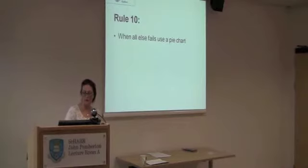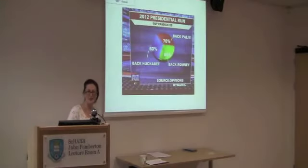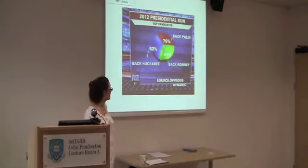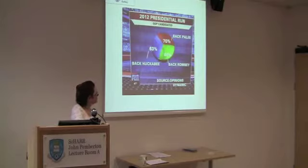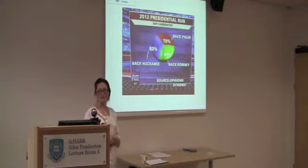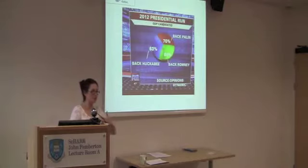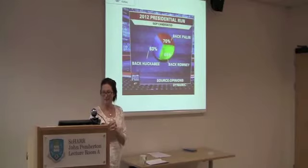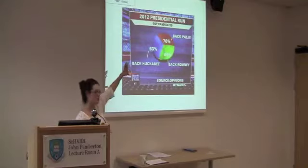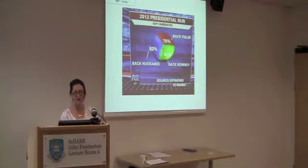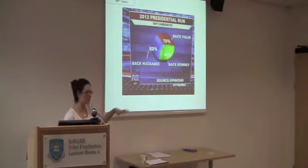Rule ten: when all else fails, use a pie chart. I have never in my professional life ever used a pie chart — they're not necessary. This came out about 18 months ago, apparently compiled by somebody who didn't really understand what they were doing. They asked people about approval ratings: do you approve Huckabee, Payne, Romney? 70% said they approved Payne, 63% Huckabee. They weren't mutually exclusive categories, and they displayed it in a pie chart without realising it's supposed to add up to 100%. As soon as this was produced on Fox News, somebody downloaded it and it spread everywhere — people were just laughing because it's so wrong.